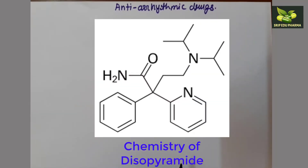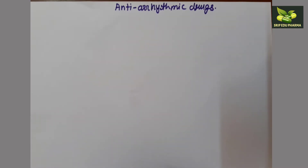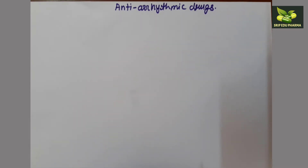So let's talk about arrhythmia. What is arrhythmia? Arrhythmia is related with the heart, that is called cardiac arrhythmia. Cardiac arrhythmias are the abnormalities in the rate and regularity, or the site of origin of the cardiac impulse, or a disturbance in the conduction of the impulse, such that the normal sequence of activation of the atria and the ventricle is altered.